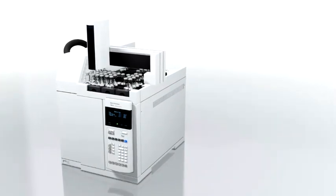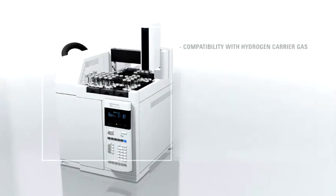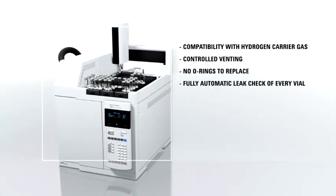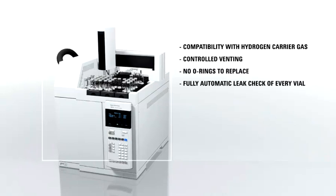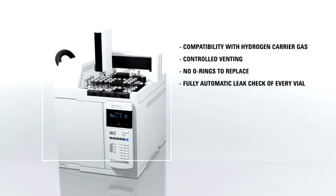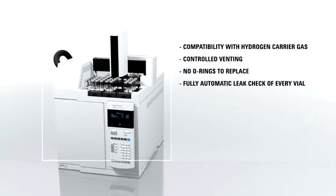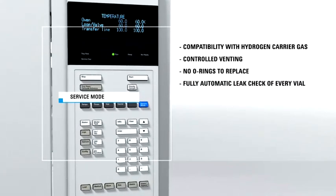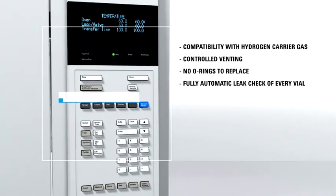The Agilent 7697A Headspace Sampler lowers operating costs and decreases your analysis time. It checks each vial for leaks without time-consuming calibration, reducing the need for re-analysis. It also supports the use of hydrogen carrier gas and offers a one-button full-system leak test for troubleshooting all pneumatic pathways.